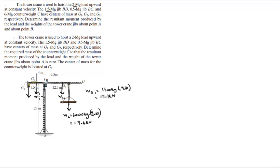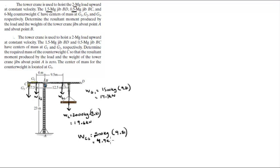Weight of g2 equals 0.5 megagrams, which is 500 kilograms, multiplied by 9.81, the acceleration of gravity, which comes out to be 4.9 kilonewtons. And the balancing weight g3: W of g3 equals —